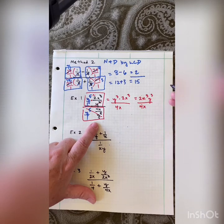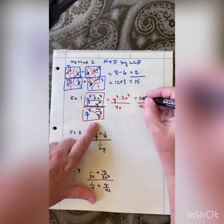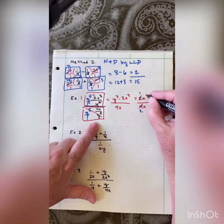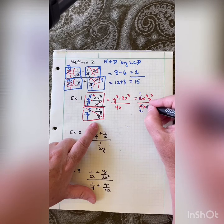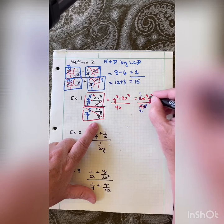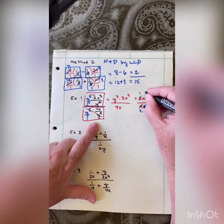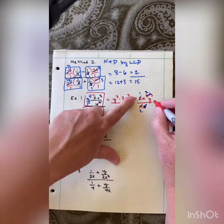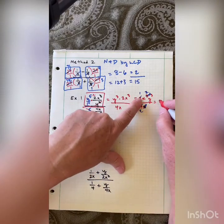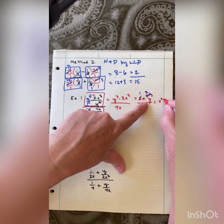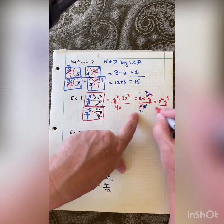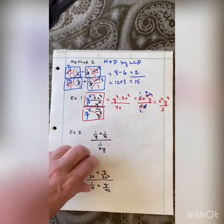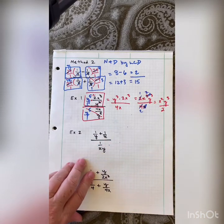So down here is over 4x. Let's see if we can reduce: two goes in once, goes in twice; I have three x's up here and one down here, so taking that out leaves a 2. Up top I'm left with x squared y cubed, and down here all that remains is 2.